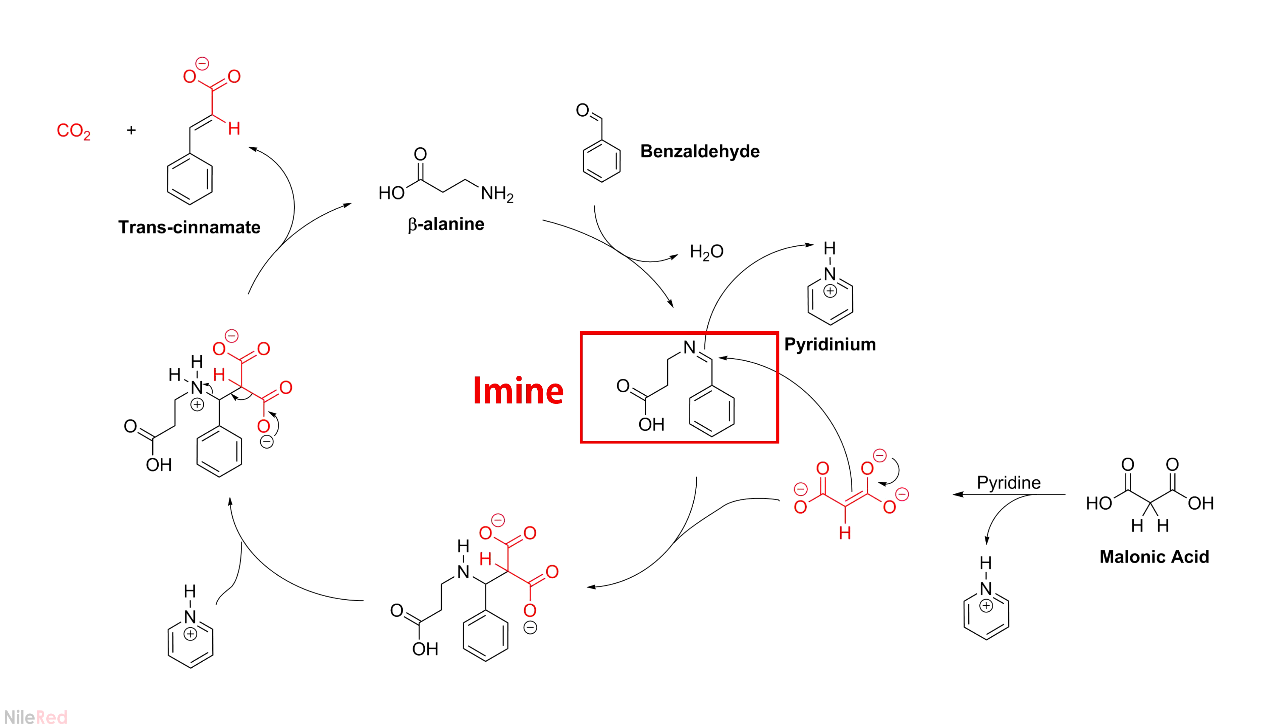So to start things off, the beta-alanine reacts with benzaldehyde to form an imine. At the same time, malonic acid is converted to its enolate form, which can attack the imine. This forms an intermediate molecule, which is the combination of the benzaldehyde, the beta-alanine, and the malonic acid.